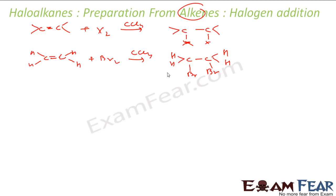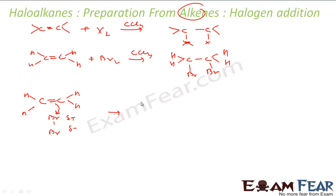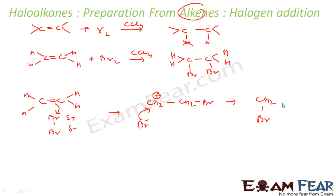So let us see the reaction mechanism for this. Bromine will break — it will have slightly positive and slightly negative charge. So this bond will break, and what we will form is: this bromine will get attached here and it will get positive charge. So what you get here is CH2-CH2-Br with a positive charge. And now this Br− will attack here. So what you get is CH2Br-CH2Br.